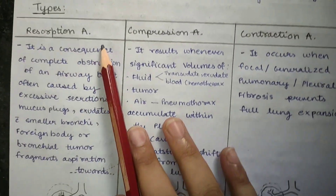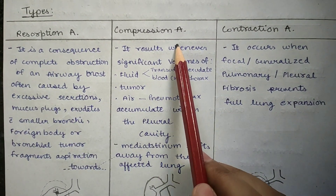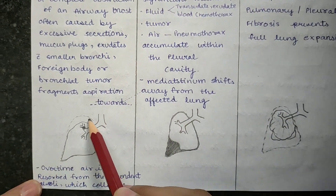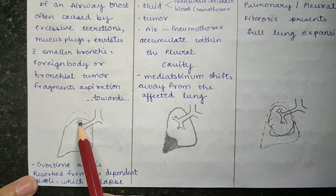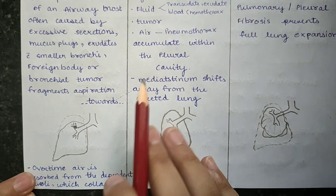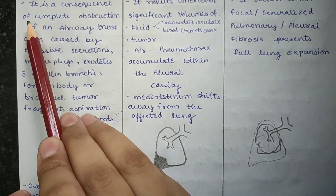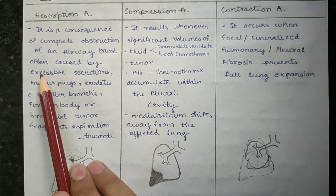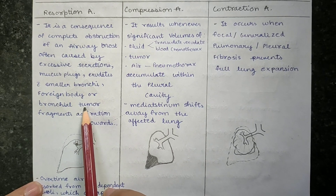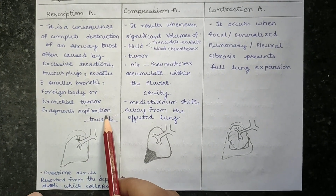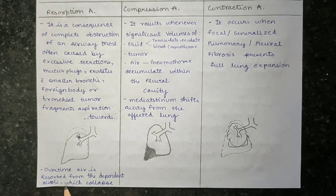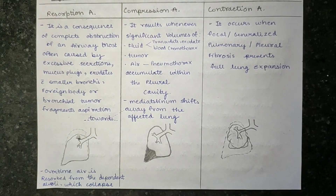The types are divided mainly into three: resorption atelectasis, compression, and contraction atelectasis. In resorption, there is an obstruction in the bronchus, hence that path gets collapsed. It is a consequence of complete obstruction of an airway, most often caused by excessive secretion, mucus plugs, exudates, foreign body, bronchial tumour fragments, or aspiration. The air gets resorbed from the dependent alveoli, which then gets collapsed.